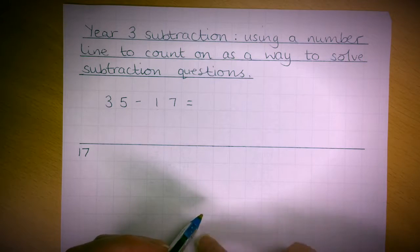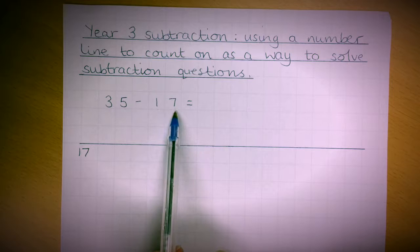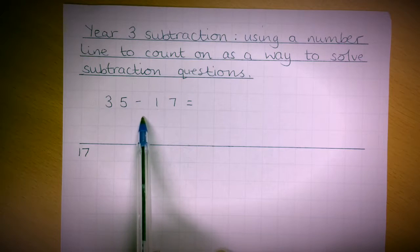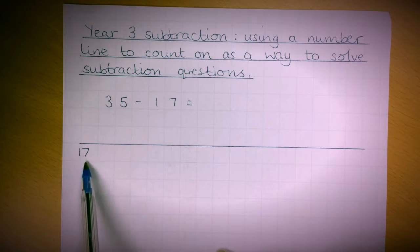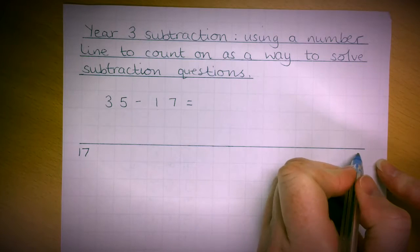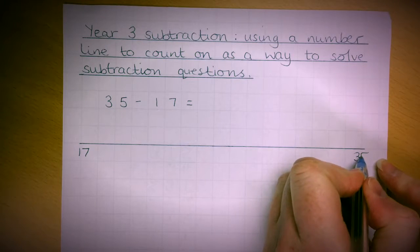To start, you need to put the smallest number, the number you're taking away, at the beginning of the number line. At the end of the number line is the number you're trying to count up to.